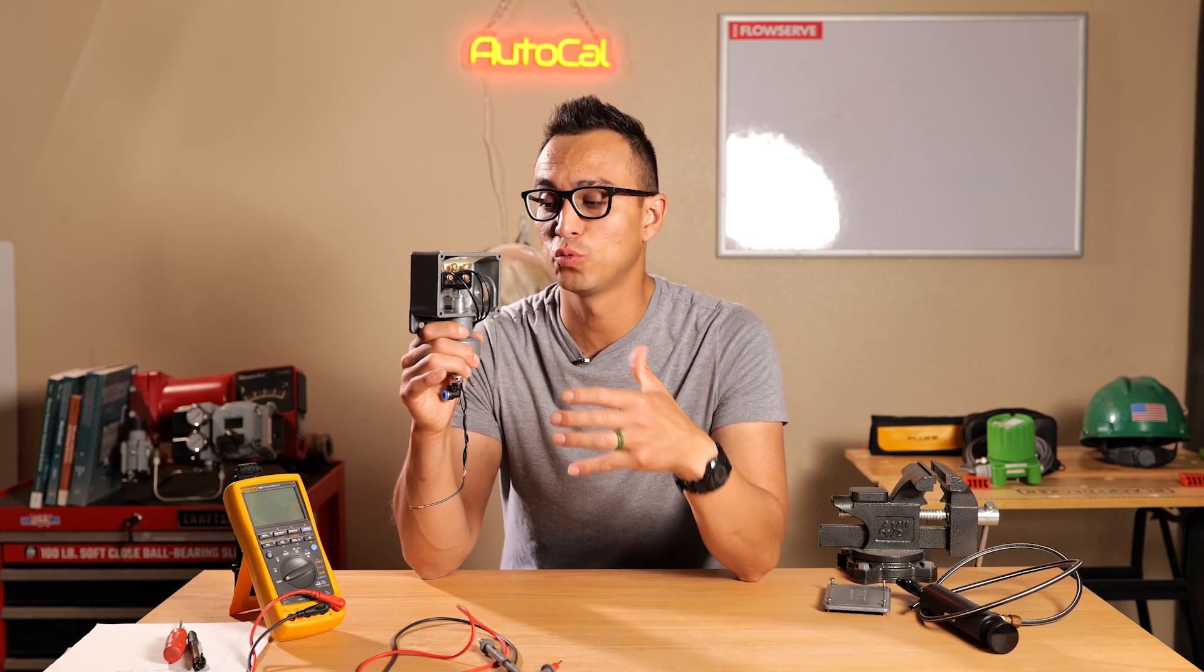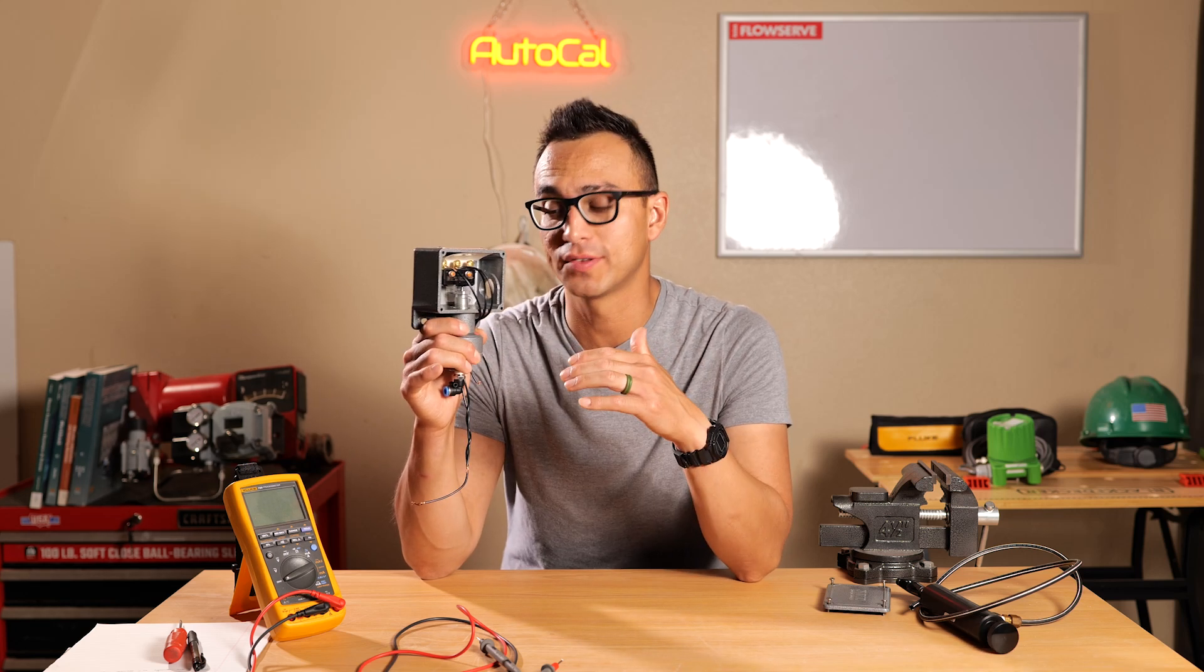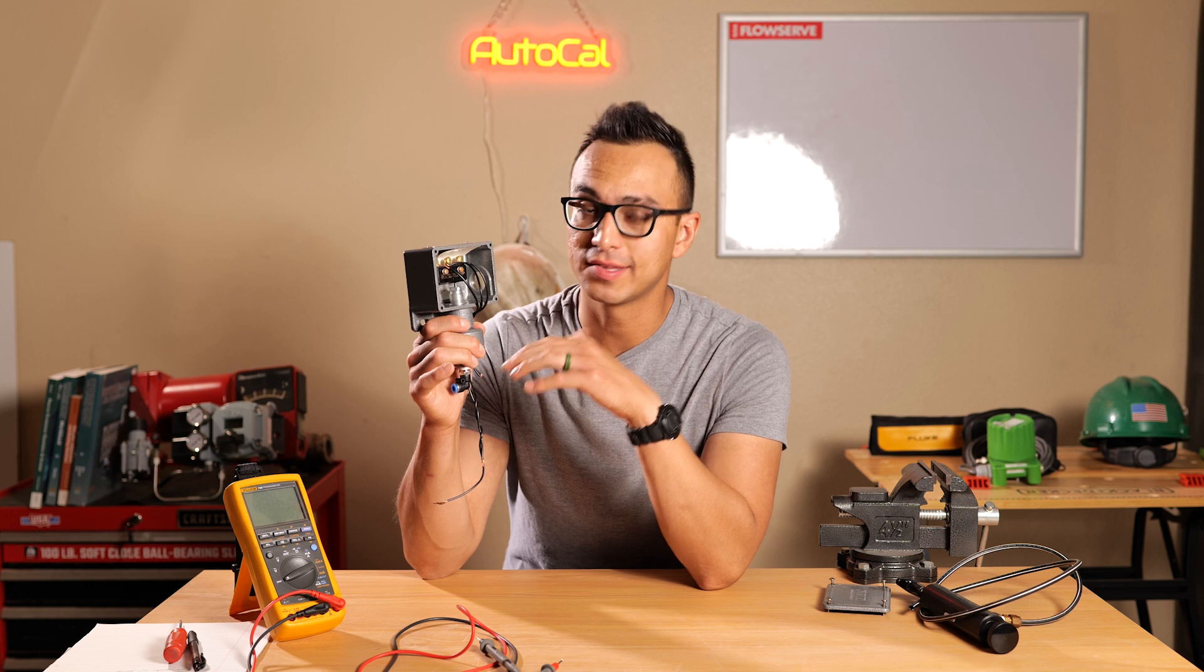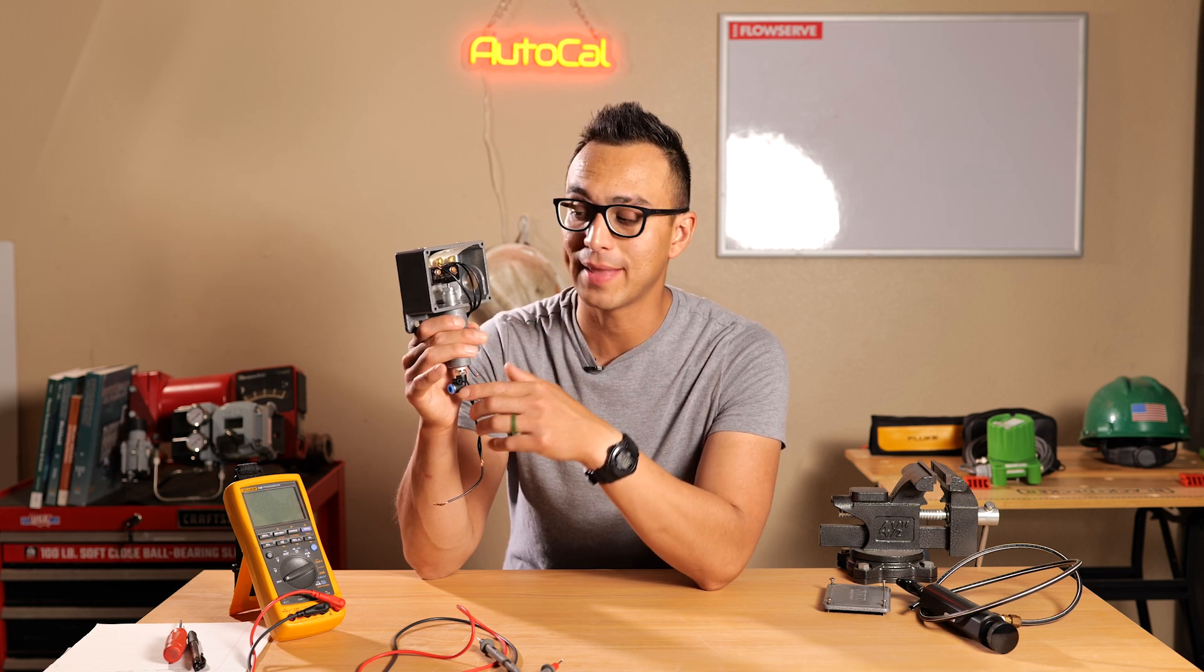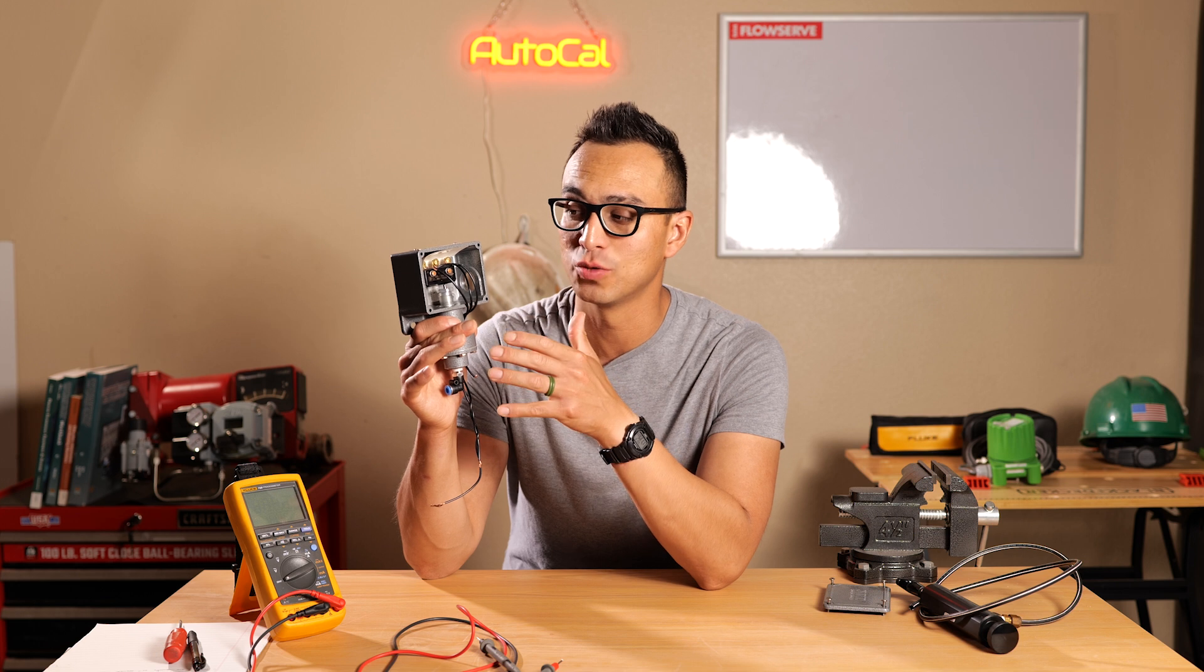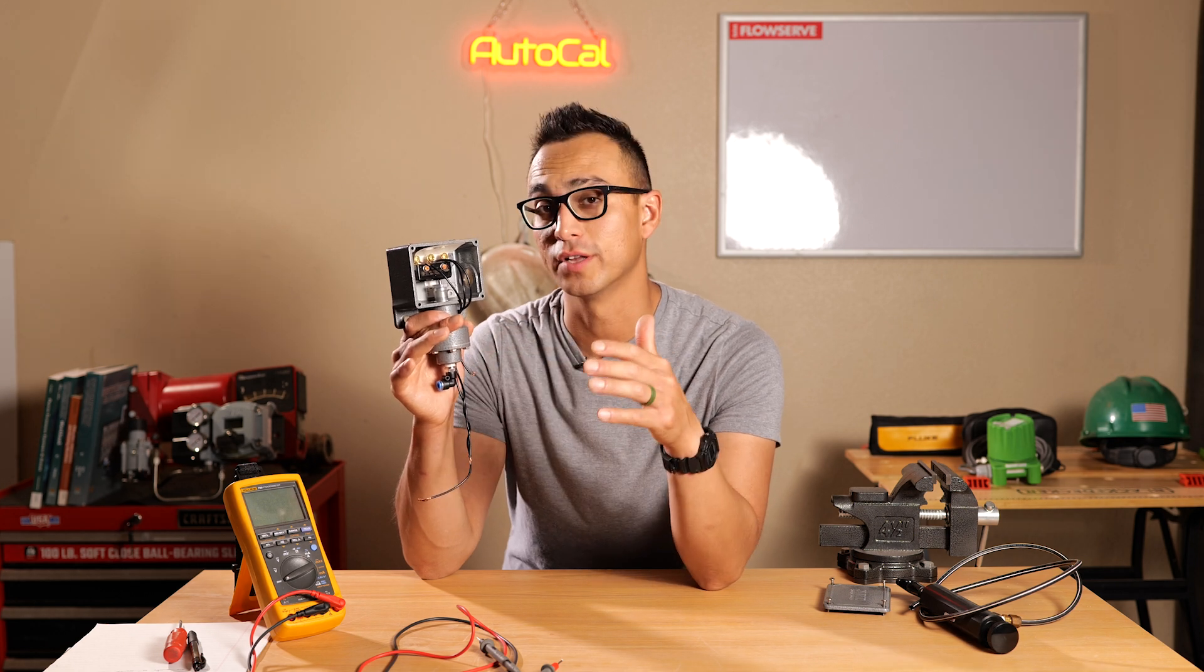Okay, so here I have a mechanical pressure switch from SOR. These are a lot more simple than they actually look. We're going to set this up, calibrate it, and adjust it, and talk about the inner workings of this switch, how it actually works in different parts and pieces. So let's go.